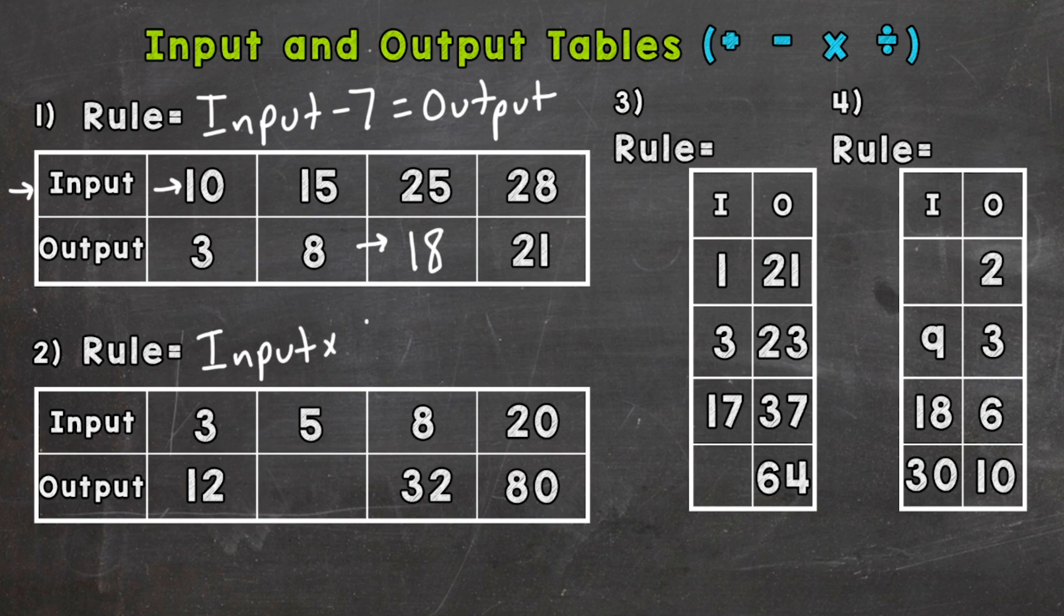So 5 times 4 gives us 20. Number 3: we have a vertical table, so it goes up and down. It's the same thing as the horizontal or side-to-side tables, it's just up and down now.